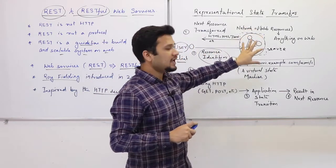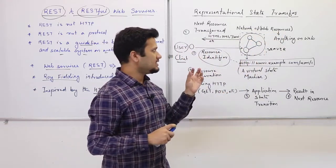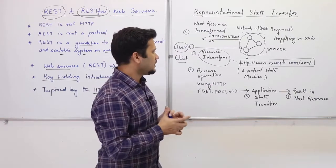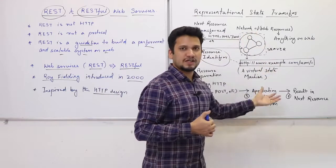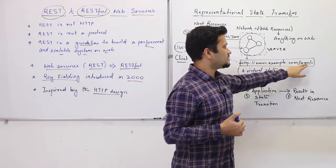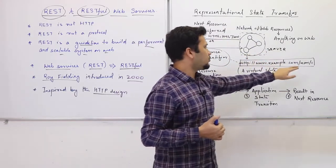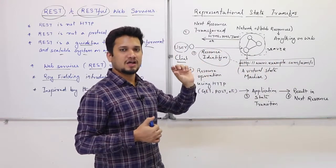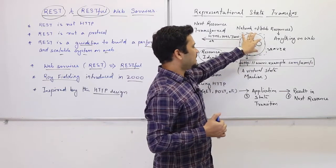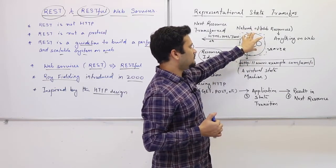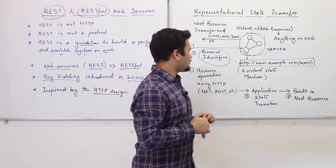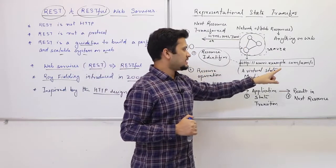The server stores resources, and the resource state — that is, a particular configuration or value of a resource — is like a state in a virtual state machine. For example, a list of users where user one has a name, an ID, and other information: that is one state of that user. You have web services which store resources and maintain a particular state for those resources.